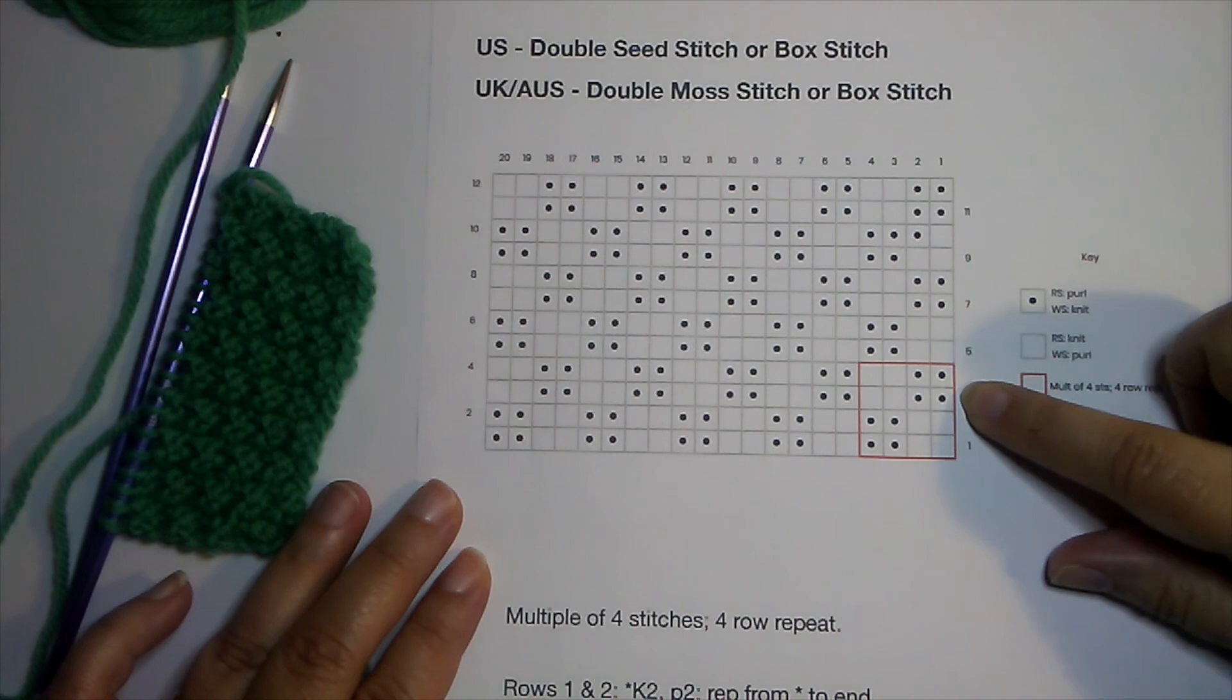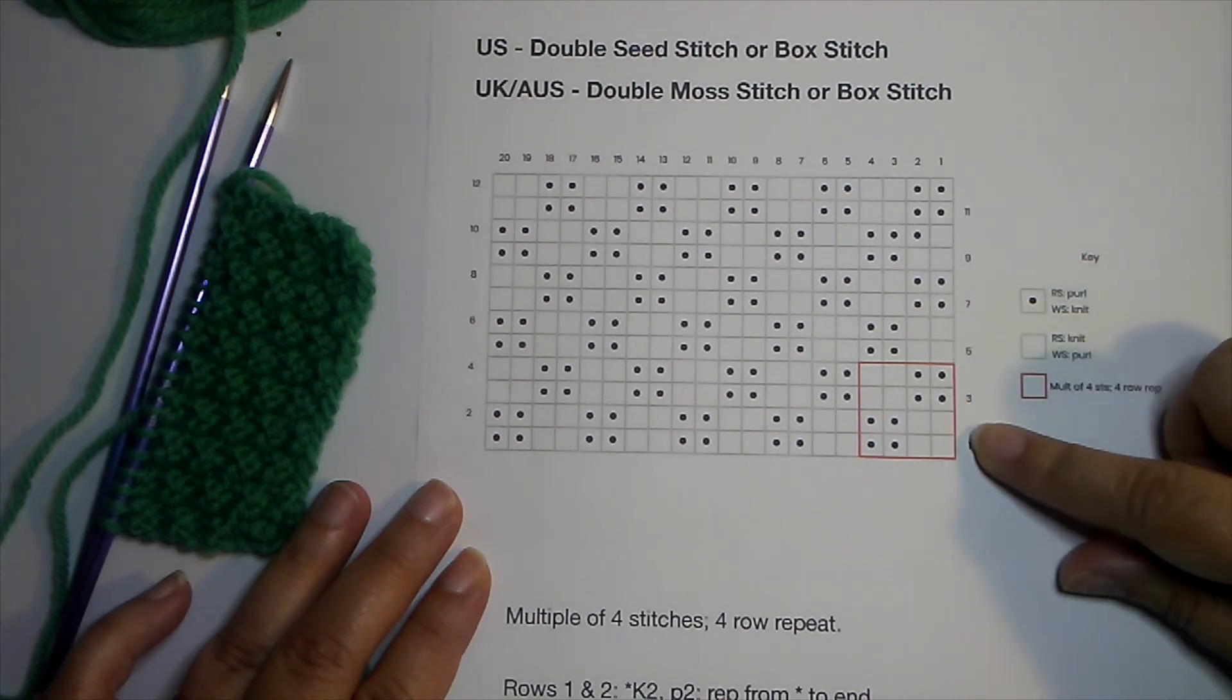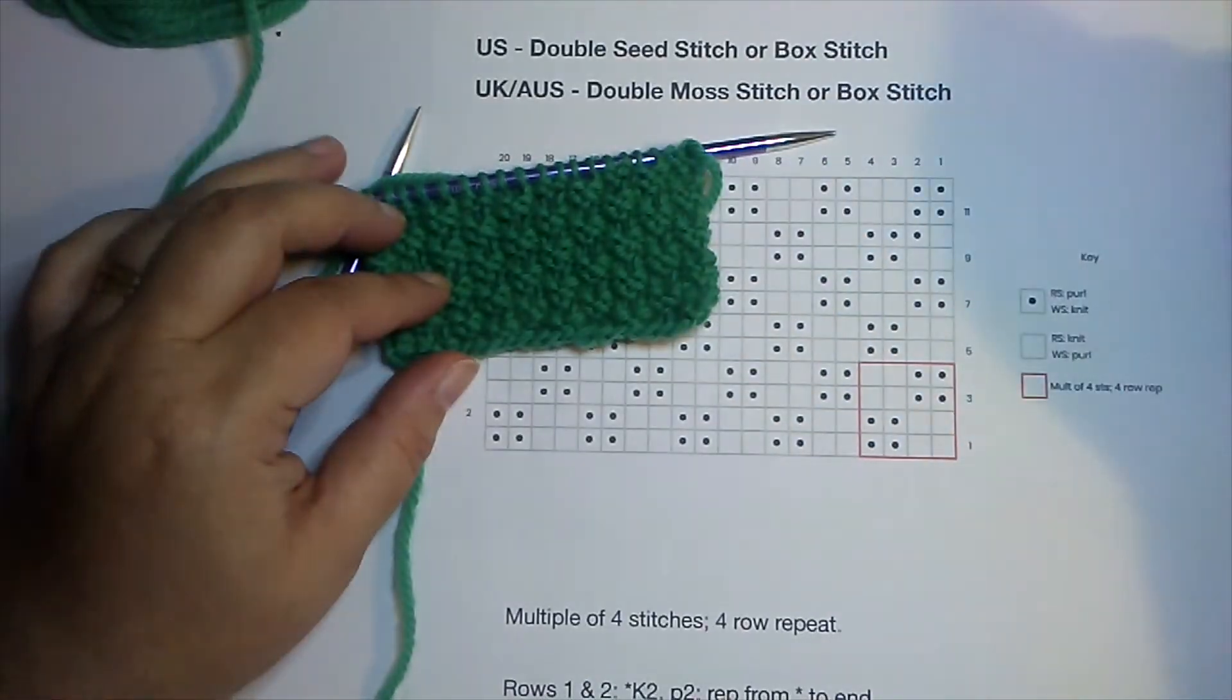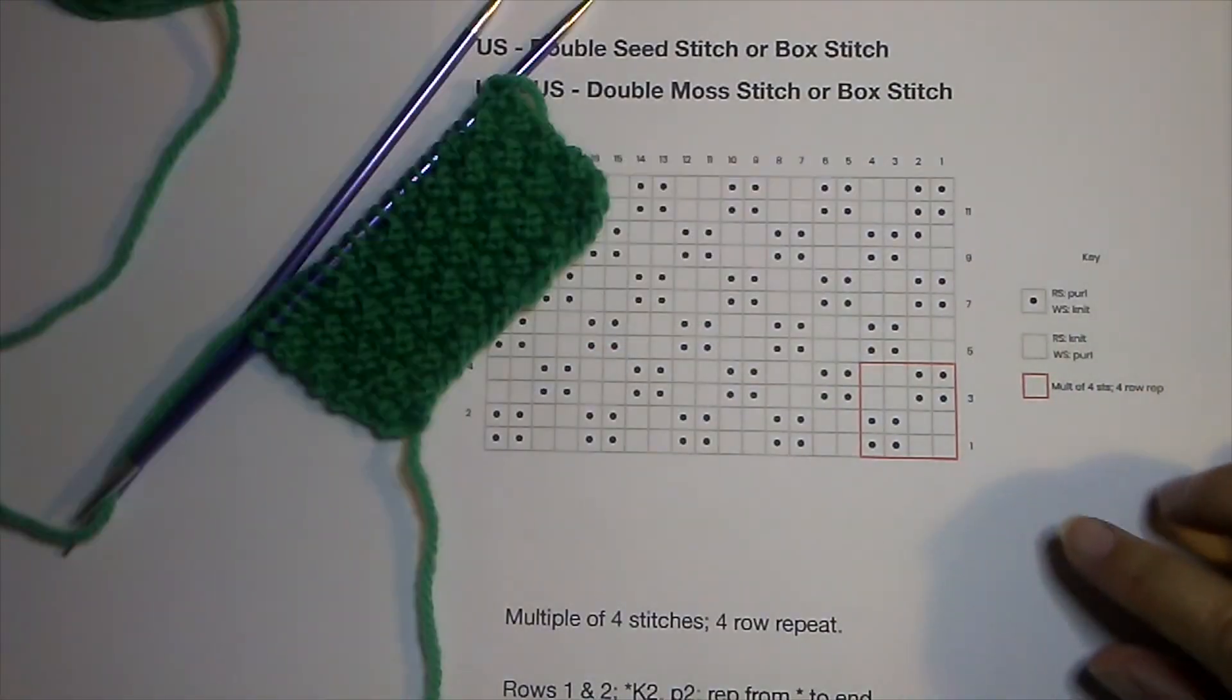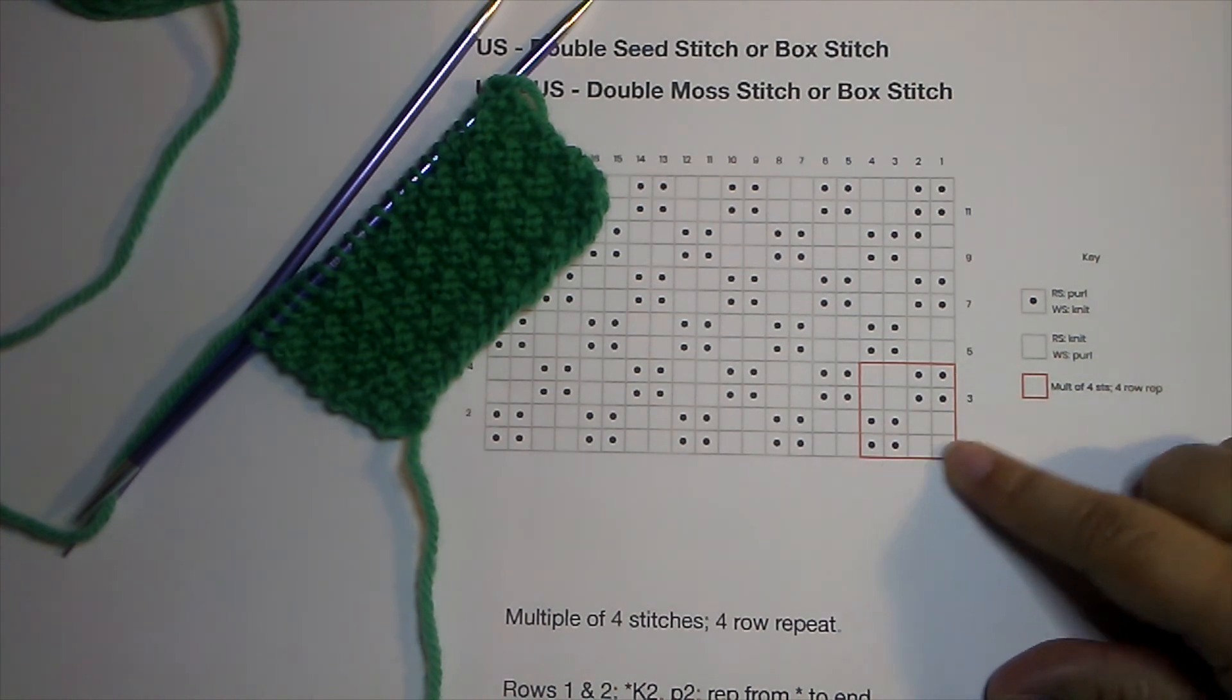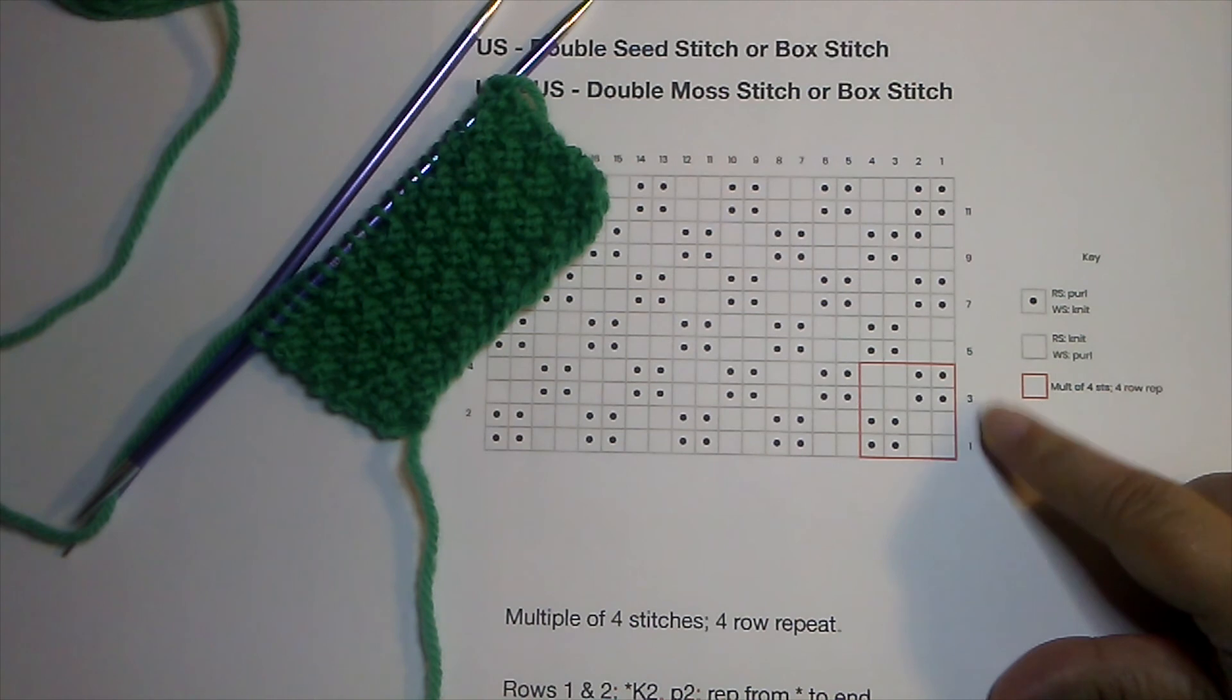But on the third row we break that pattern and we start with a purl two, knit two. So we end up with these little boxes, hence the name box stitch. It is a multiple of four stitches and it's a four row repeat. You can see that right here, this is the repeat.